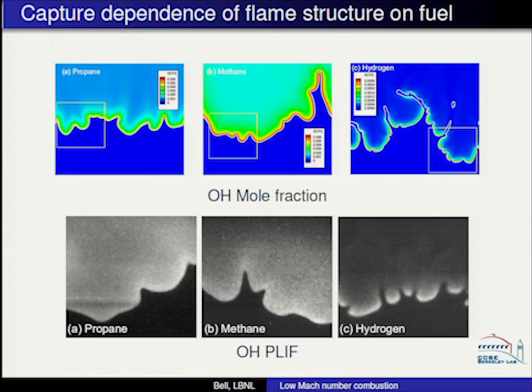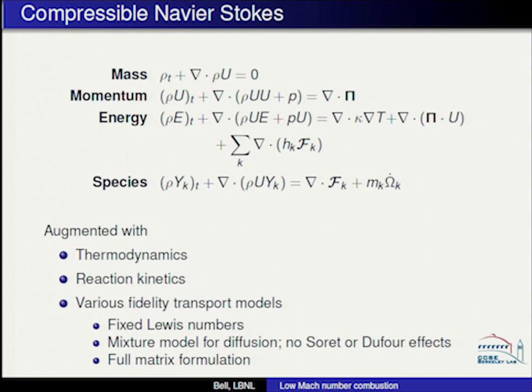Methane is insensitive to curvature at these conditions. Hydrogen burning is enhanced in regions of positive curvature and propane is reduced. The system we're dealing with is compressible Navier-Stokes: conservation of species, energy, and momentum. This is closed by thermodynamic relationships, reaction kinetics models, and transport models at various levels of fidelity, ranging from fixed Lewis numbers to a mixture model. We typically live in the middle, and then there are full matrix formulations.